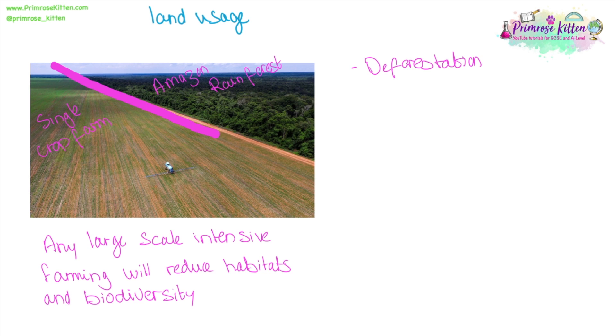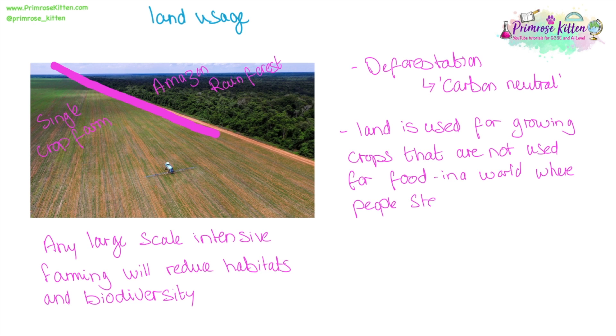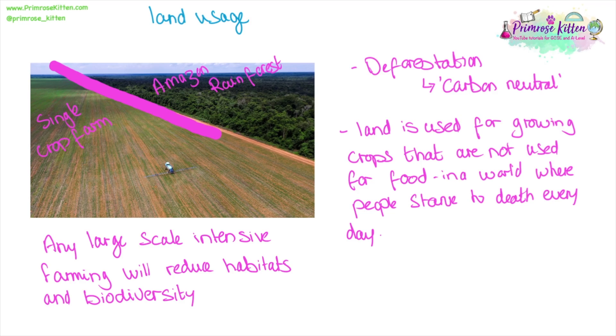Here we can see that deforestation has taken place so that they can grow a crop in an apparently carbon neutral process. This is not very carbon neutral. The land here is used for growing a crop that could be used to feed people. It's growing sugar cane. In a world where children go to bed hungry and people starve to death every single day, is it ethical to take crops that could be used for food and to use them for bioethanol? Also, the land could be used for growing other crops such as wheat, which could feed more people.